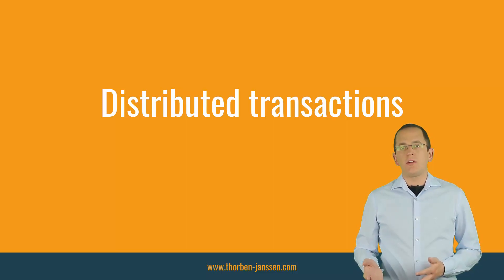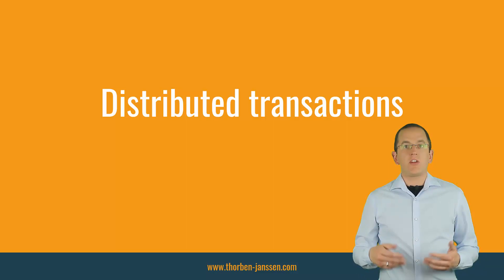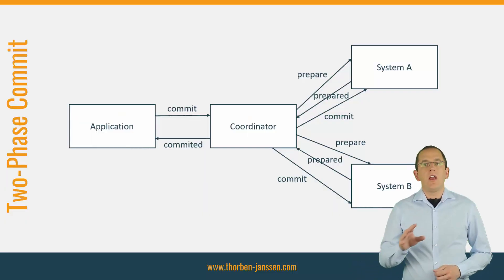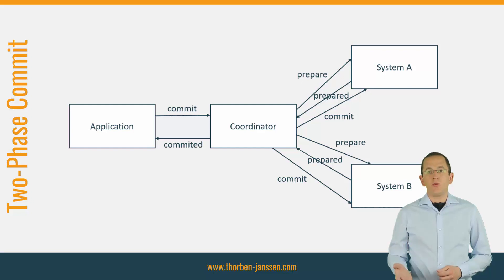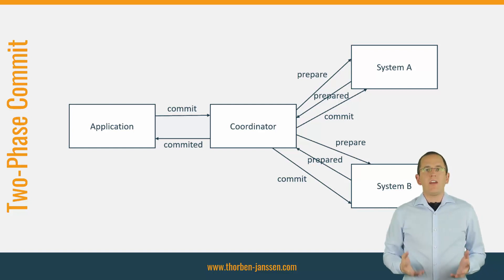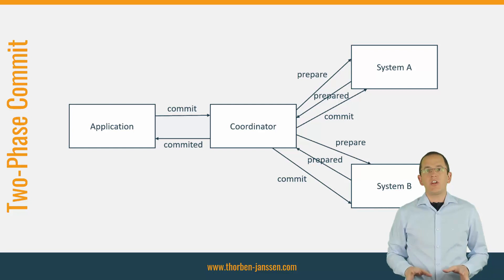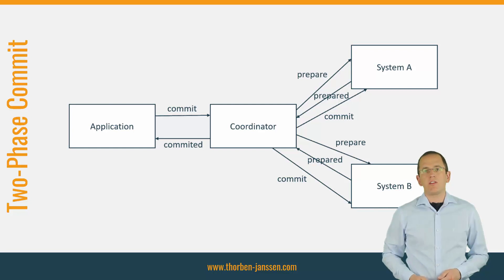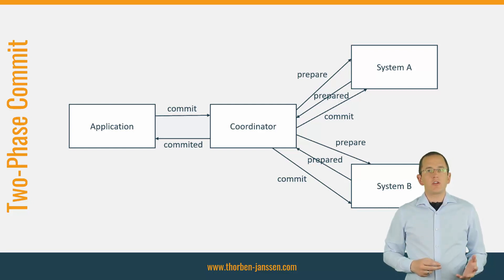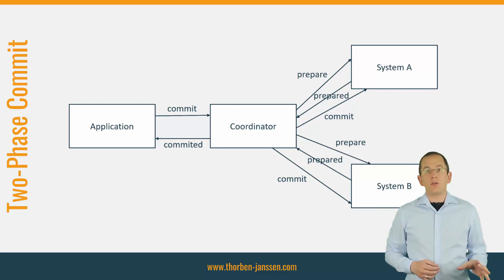The two-phase commit pattern describes a complex process that requires multiple steps and blocks. The main difference between a local and distributed transaction using two-phase commit is the commit operation. As soon as more than one system is involved, you can't just send a commit message to each of them — that would create the same problems as dual writes. Two-phase commit avoids these problems by splitting the commit into two steps. The transaction coordinator first sends a prepare command to each involved system. Each system checks if it could commit the transaction; if so, it responds with 'prepared' and the transaction coordinator sends a commit command to all systems.